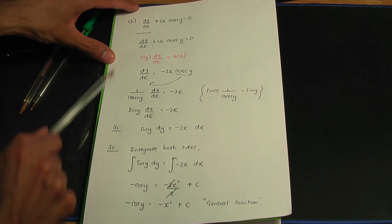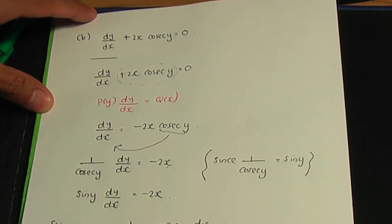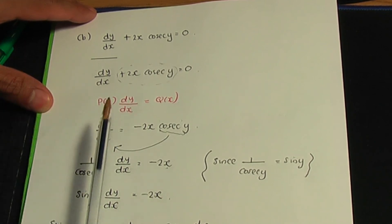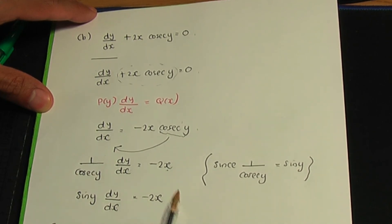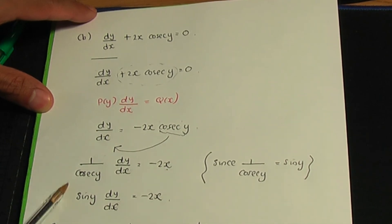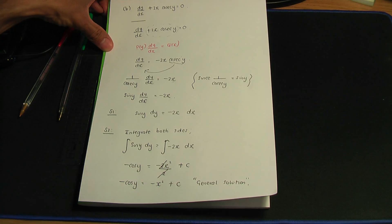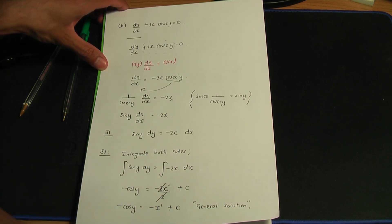Before starting step one, first investigate whether your equation is indeed first-order. Rearrange your equation and see whether you can write it in the form p(y) dy/dx = q(x). If you can, it is a first-order differential equation and you use separation of variables to find the solution. If you can't rearrange it in that form, you may have another class of differential equation requiring a different method.